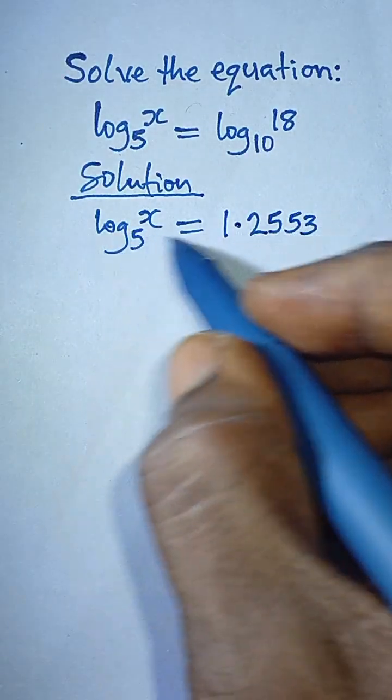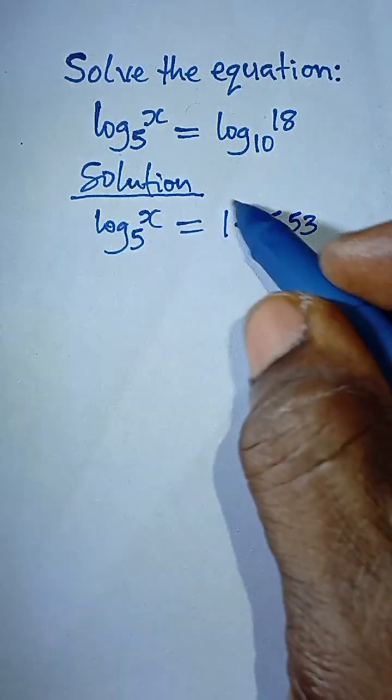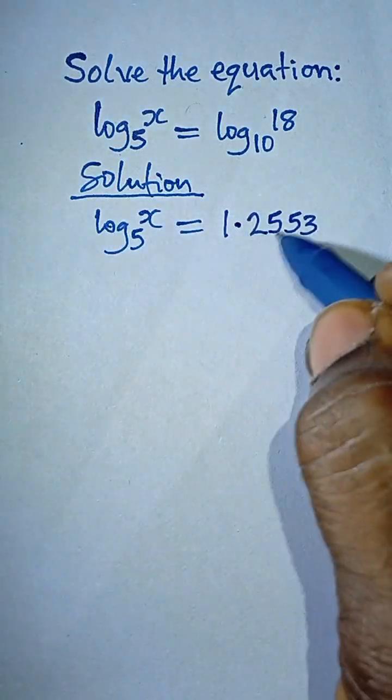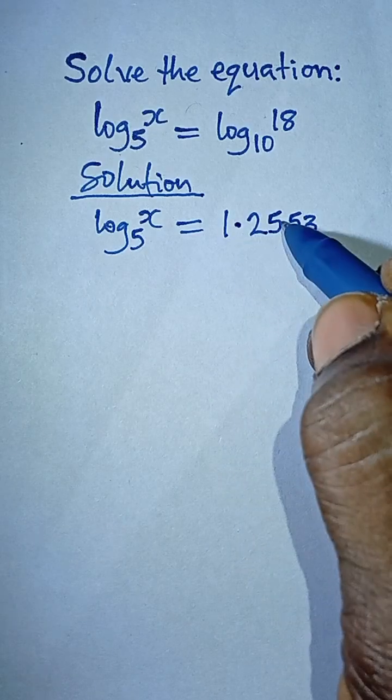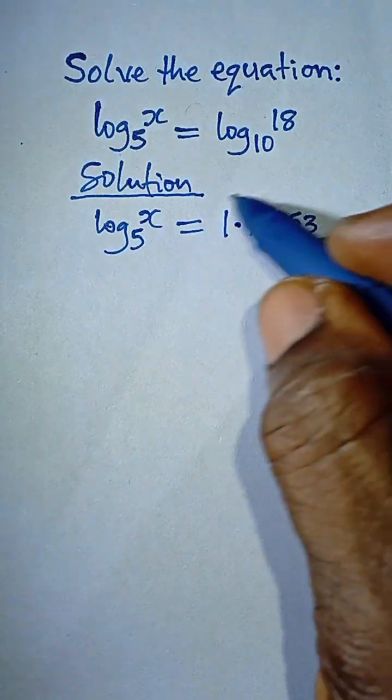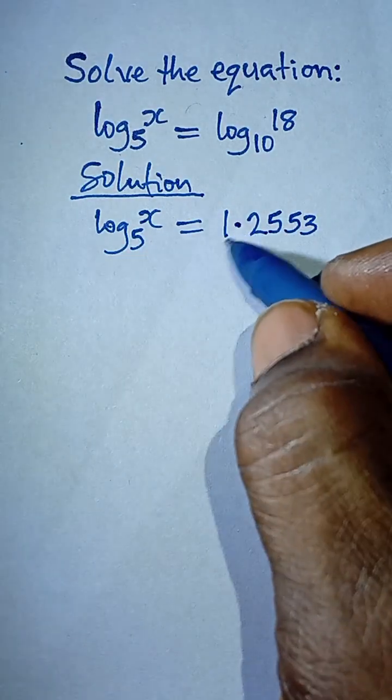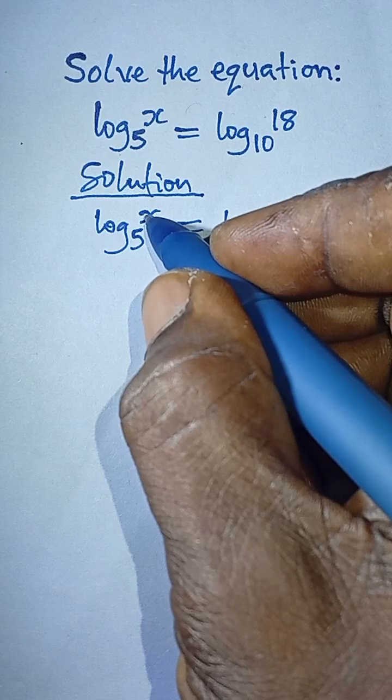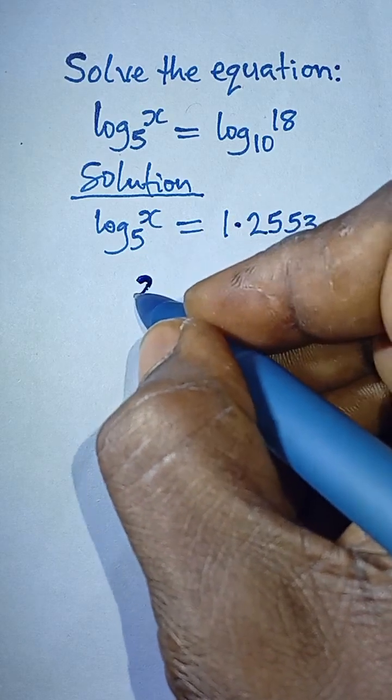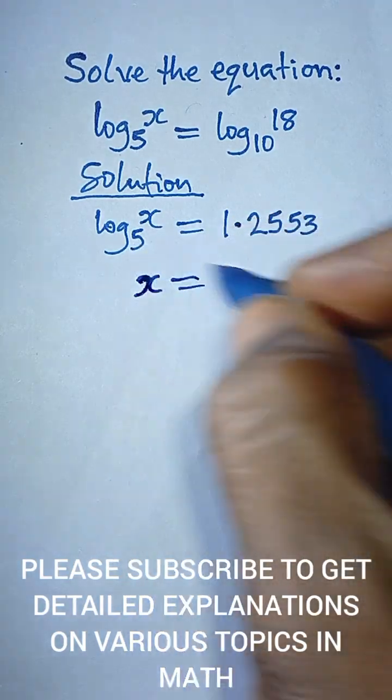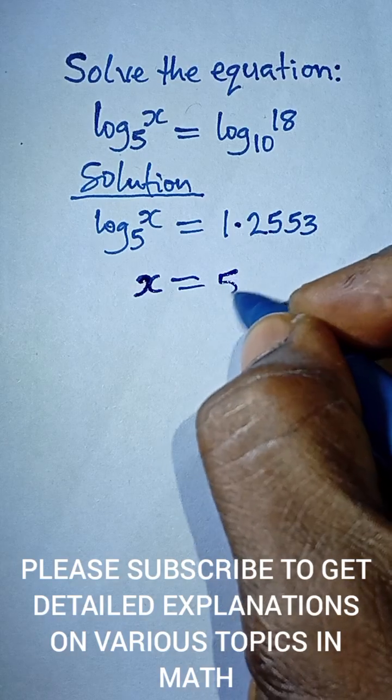Now as we have this, we can simply convert this logarithm together with this answer to indices. So I'm going to take x, which will be equal to the base here becomes the base of the indices.